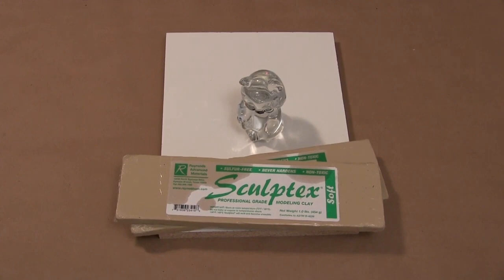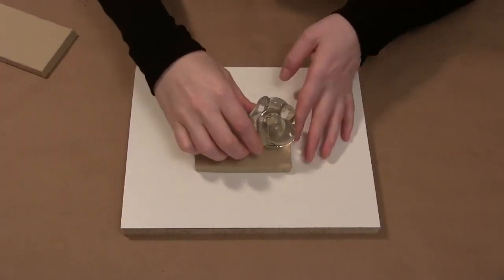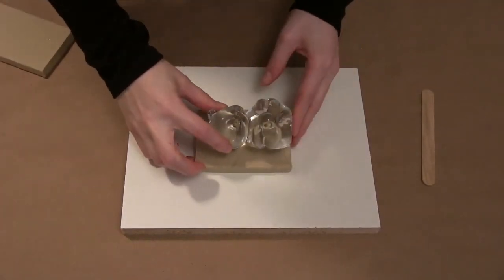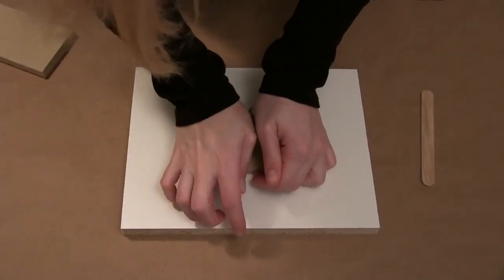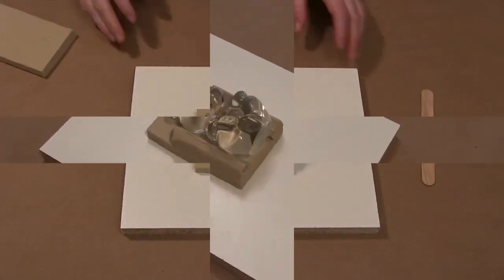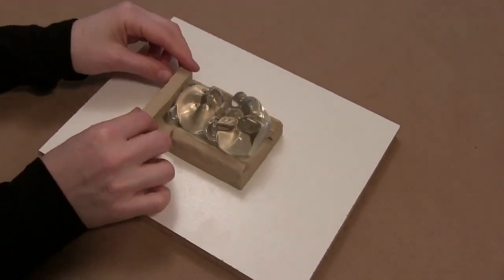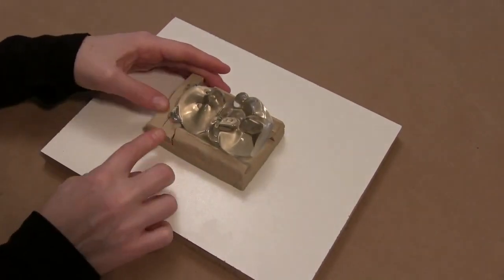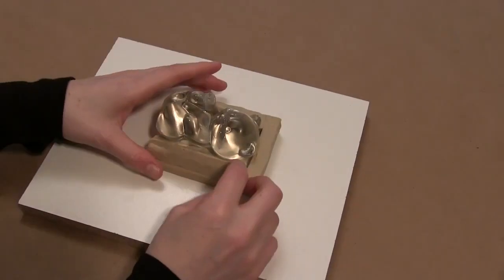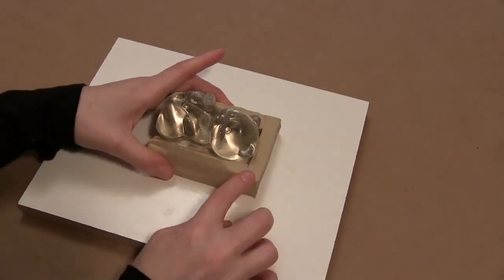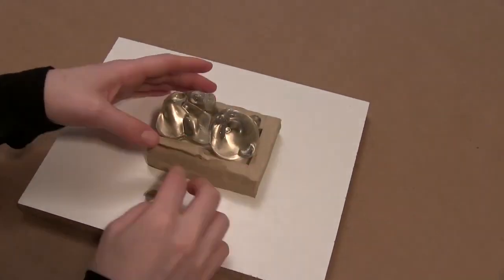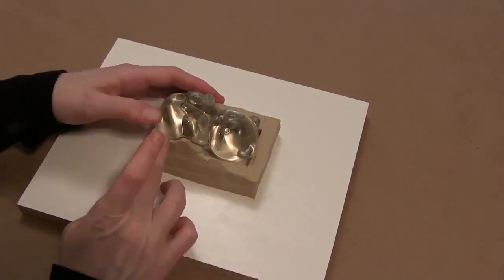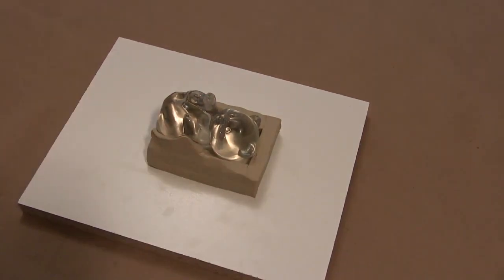So to begin, I'm using some Sculptex sulfur-free clay. It's important to use sulfur-free clay because most silicones will be inhibited by anything containing sulfur. So what I'm doing is embedding my model in this clay. I'm going to build up to that partition line that I showed you in the beginning, and I'm just going to slowly add pieces. Of course, now I have the video running at hyperspeed because I actually work very slowly and we would be here for hours.